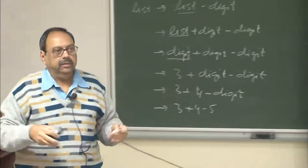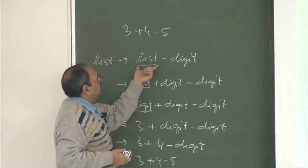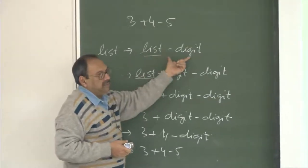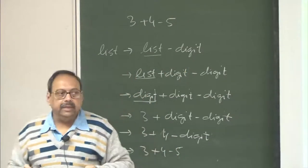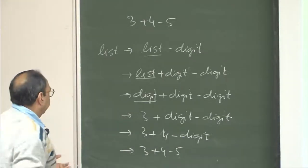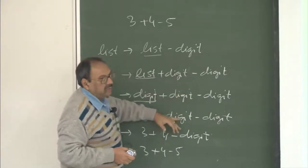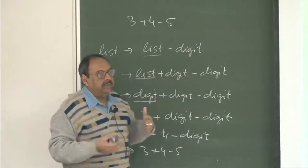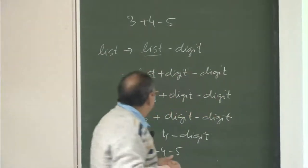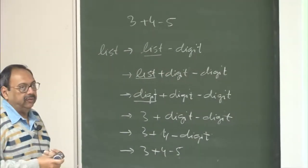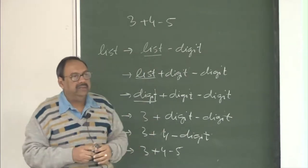But there are several things left unspecified. One, I was saying list goes to list minus digit — why did I choose this rule and not some other? Which rule to pick up — somehow there was magic happening and I was always able to pick the right one. Second, there was an option where a digit could have been replaced by 5 and I could have continued the rest of the derivation. So which order I am replacing was not specified — which rule to pick up and which symbol to pick up for expansion are left unspecified, but somehow I managed to reach the final answer.